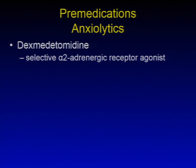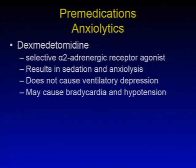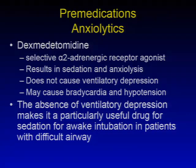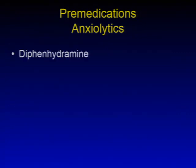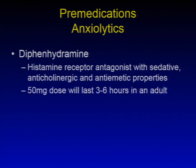Dexmedetomidine is a selective alpha-2 adrenergic receptor agonist with higher affinity for the alpha-2 receptor and less for alpha-1, similar to clonidine. It results in sedation and anxiolysis without ventilatory depression, though it may cause bradycardia and hypotension. Its absence of ventilatory depression makes it particularly useful for sedation during awake intubation in patients with a difficult airway. Diphenhydramine is a histamine receptor antagonist with sedative, anticholinergic, and antiemetic properties; a 50 mg dose lasts 3–6 hours in an adult, but it causes tachycardia and may not be the best choice in someone with unstable cardiac status.